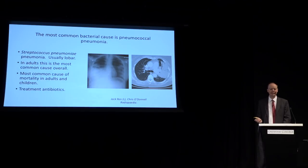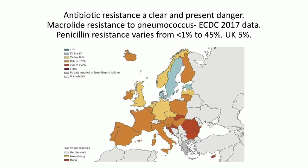The treatment — if caught early, usually highly successful — is antibiotics. Fifty years ago virtually all available antibiotics would have had a significant impact. The big threat we now face is antibiotic resistance. The particular antibiotics used — penicillins and cephalosporins — show huge variation in drug resistance across Europe, ranging from less than 1% up to more than 45%. The UK is in pretty good shape at roughly 5% resistance. These forms of drug resistance are spreading because of the overuse of antibiotics.